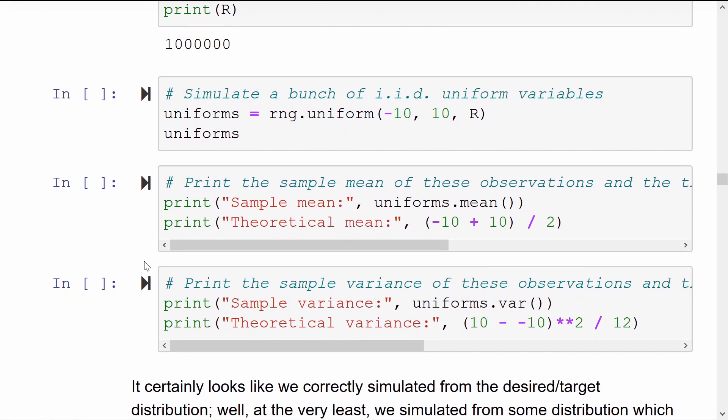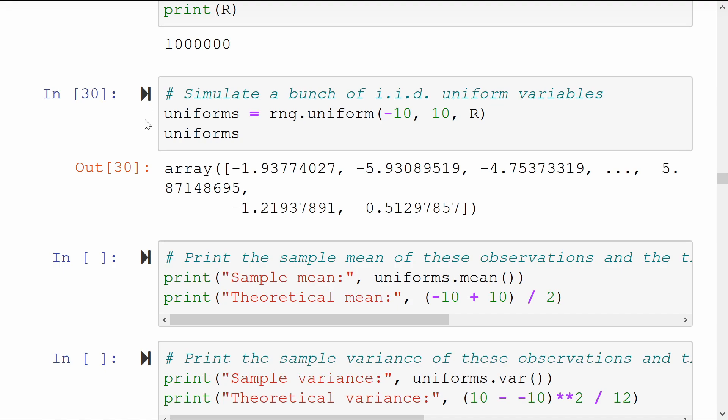So now we have r storing the number of replications, the number of IID uniform random variables that we want. Let's go ahead and simulate these. Jupyter hasn't overwhelmed us with 1 million numbers here. It's just given us the first few random numbers in the vector and the last few.